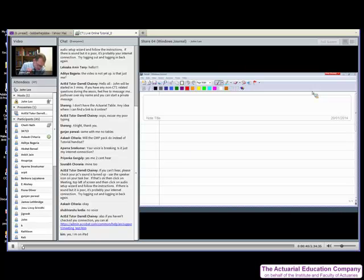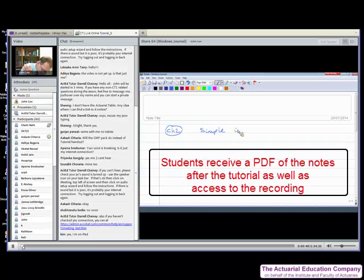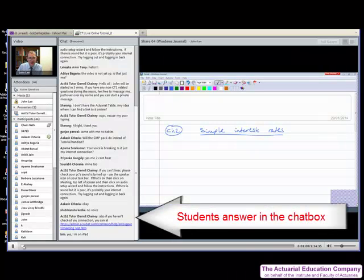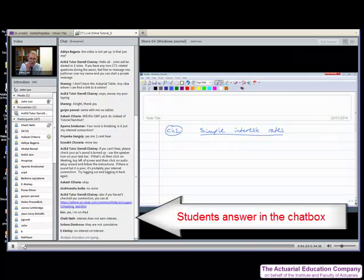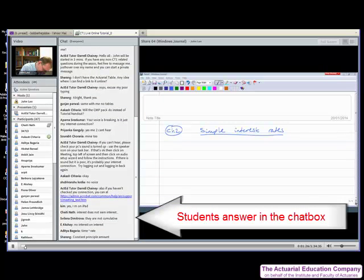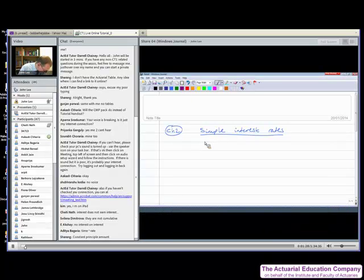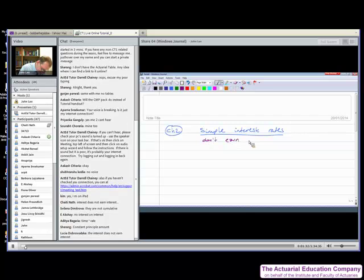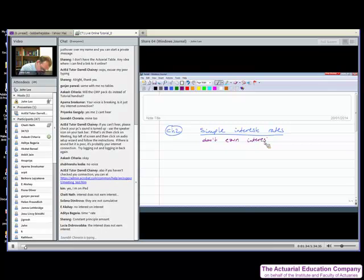So we're going to start with chapter two, which covers interest rates. And the first thing that it talks about is something called simple interest rates. So in a sentence, what is the essential feature of simple interest rates? Yay! Not cumulative, don't earn interest, no interest on interest. You're all correct. Okay, the essential feature is that you don't earn interest on interest.